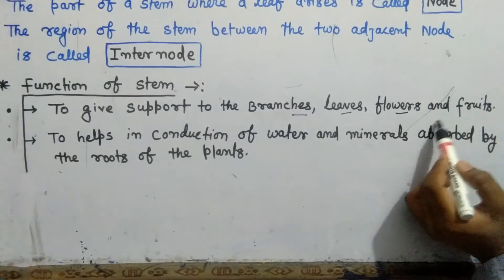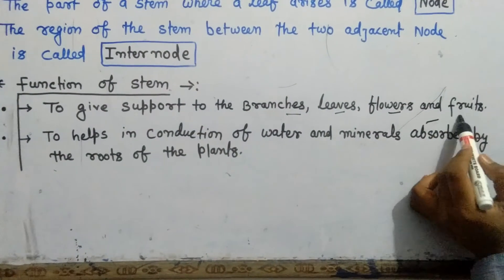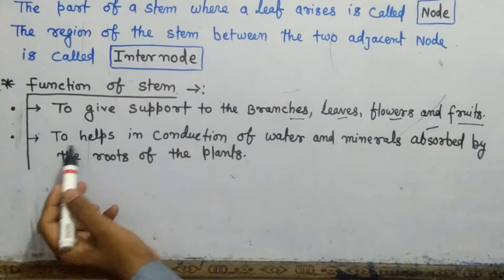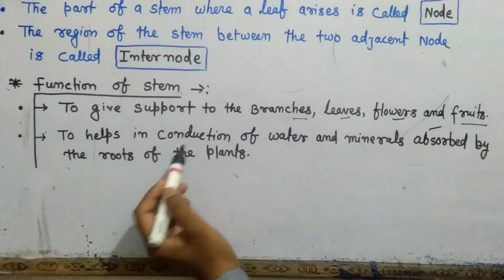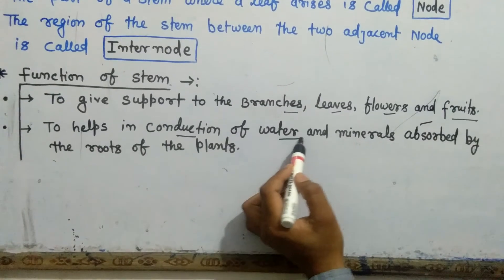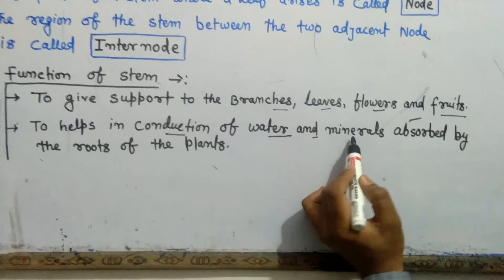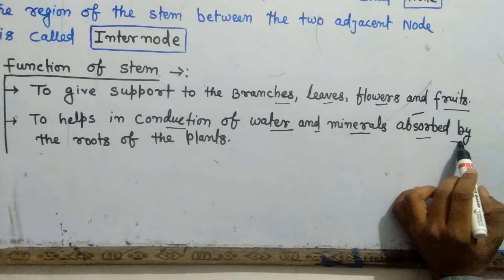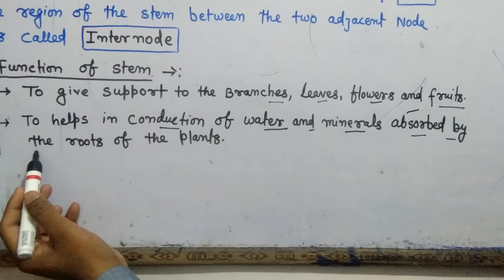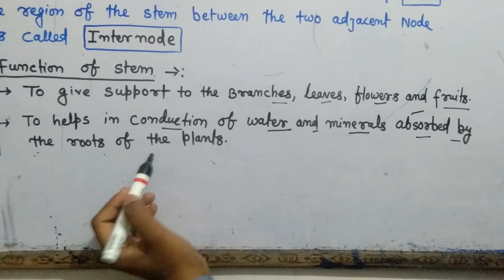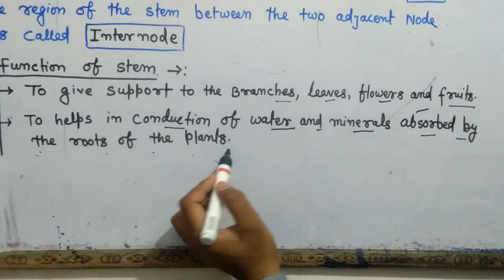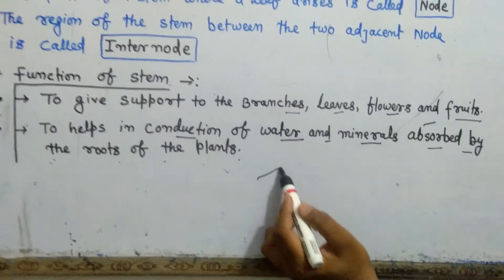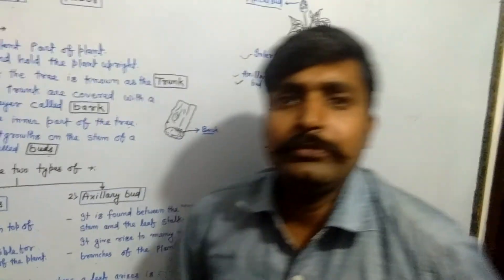The functions of the stem are: to give support to the branches, leaves, flowers, and fruits, and to help in the transportation of water and minerals absorbed by the roots of the plant.